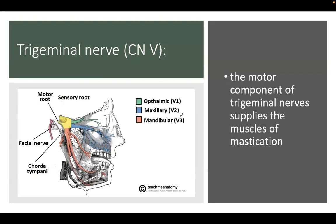For the trigeminal nerve, it has a sensory root and a motor root. The motor component supplies the muscles of mastication — the masseter, the lateral pterygoid, and the medial pterygoid. The lateral pterygoid opens the mouth: when you say 'la la la,' you open the mouth. The medial pterygoid elevates and closes the jaw: when you say 'me me me,' you are closing the mouth.